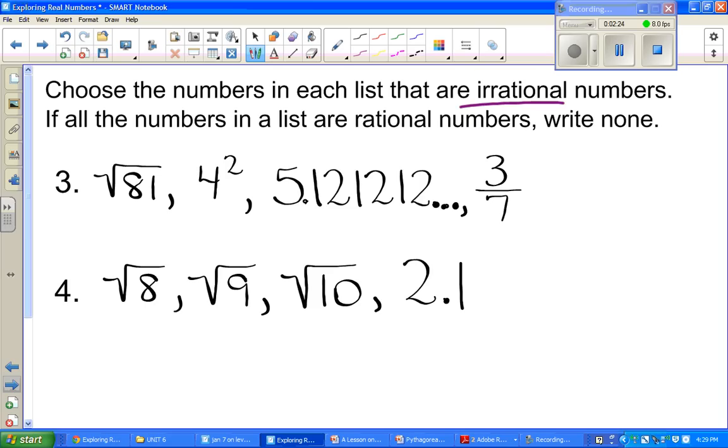We have square root of 81. Will that simplify? Yes, it will. So the square root of 81 is 9. And then the next one is 4 squared. That just means 4 times 4, which is 16. And then the decimal number, we have 5 and notice that you have 1, 2, 1, 2, 1, 2, and it's a repeating decimal. A repeating decimal is in fact rational. And then the last one is 3 sevenths. It's a fraction. So our answer to this one would be none. None of these are irrational.